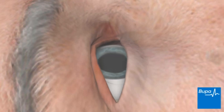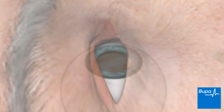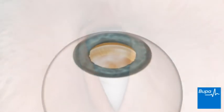Local anaesthetic drops will be placed in your eye. This will completely numb your eye. Sometimes a local anaesthetic injection is used instead of drops.